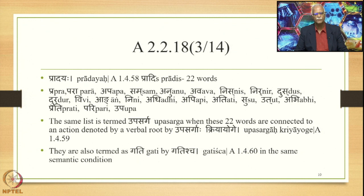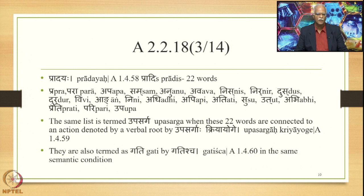The same list is also termed upasarga when these 22 words are semantically connected to an action denoted by a verbal root, by sutra upasarga-kriya-yogi (1.4.59). The same list is also termed gati by sutra gatica (1.4.60) in the same semantic condition. When pradis are referred to independently — separate from gati — they refer to the word pradis when they are not connected to a verbal root.